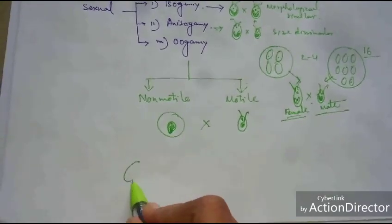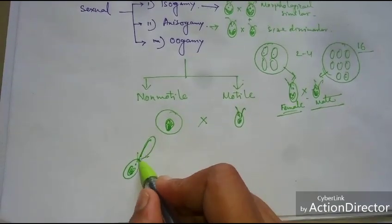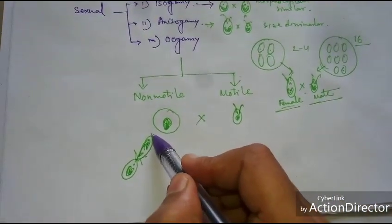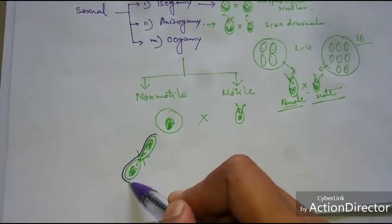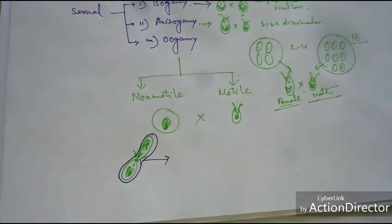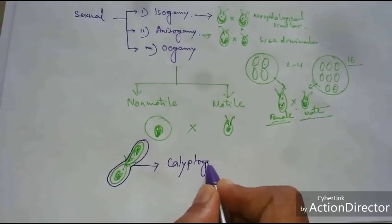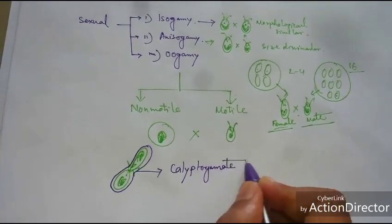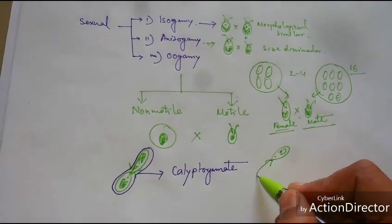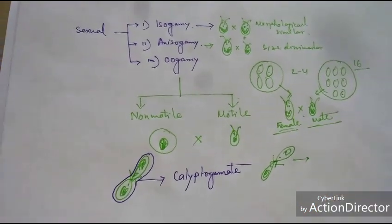During fusion of two cells, if there is a layer called agglutinin formed from the cell wall, this is called Calyptogamous. Or during fusion, if there is no cell wall layer, this type of fusion is called Gymnogamous.